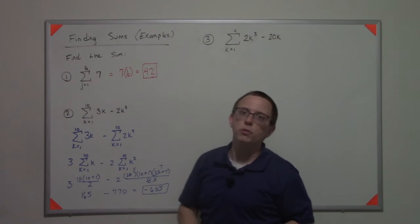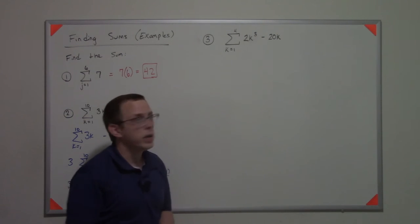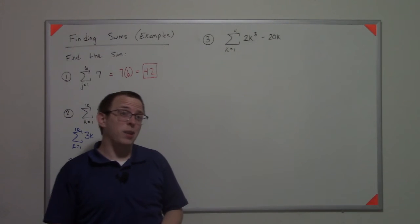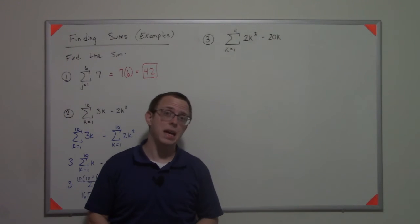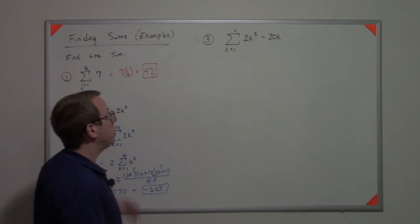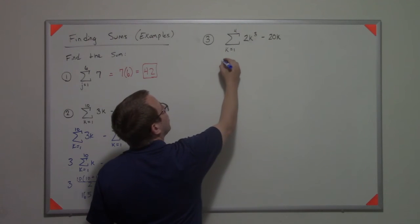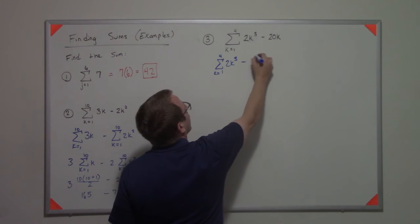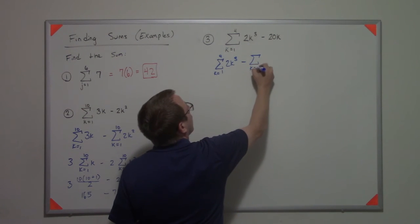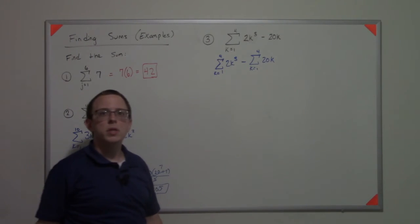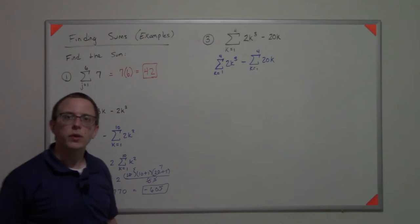Now for this one, k equals 1 to 4 is so low I could probably calculate it by hand. But let's not do that. Let's do the same process we did here. Let's split it up. And then once it's split up, let's factor out the coefficients.